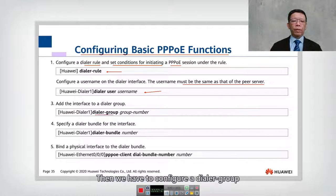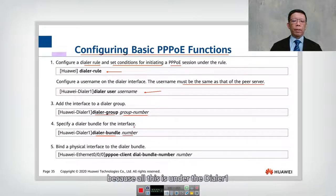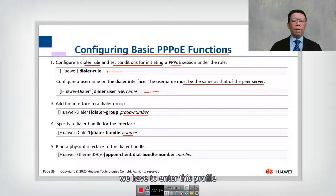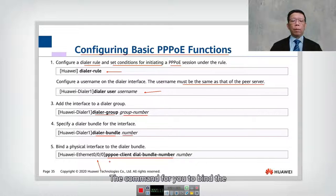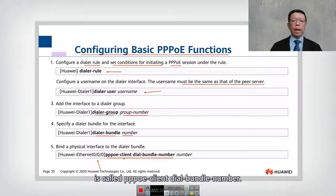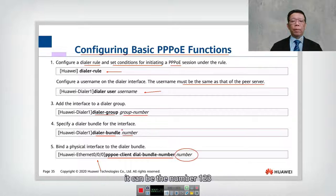Then we have to configure a dial group followed by the group number, then we put in the dial bundle with the same number that we specified, because all this is under dial one. Once we have configured this profile, we have to enter this profile in the interface. In this example, the interface is Ethernet 0/0/0. The command to bind the physical interface to a dial is called pppoe client dial bundle number. The number here — which can be one, two, or three — must be matched.